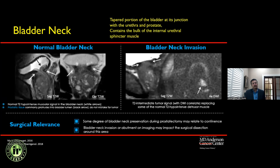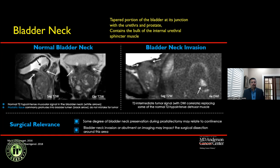The bladder neck is a critical structure that can be difficult to assess on imaging — there are no clear tissue planes between the prostate and bladder, making bladder neck involvement difficult to identify prospectively, especially when subtle. The normal bladder wall shows T2 hypointense signal, and the gland extends into the bladder neck region. Discontinuity of the bladder wall and abnormal tumor signal at the base extending into the bladder neck are signs of bladder neck involvement. Reporting this helps surgeons avoid positive surgical margins.